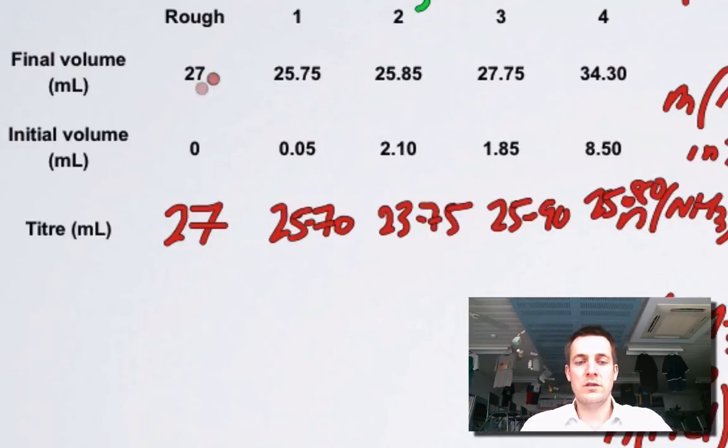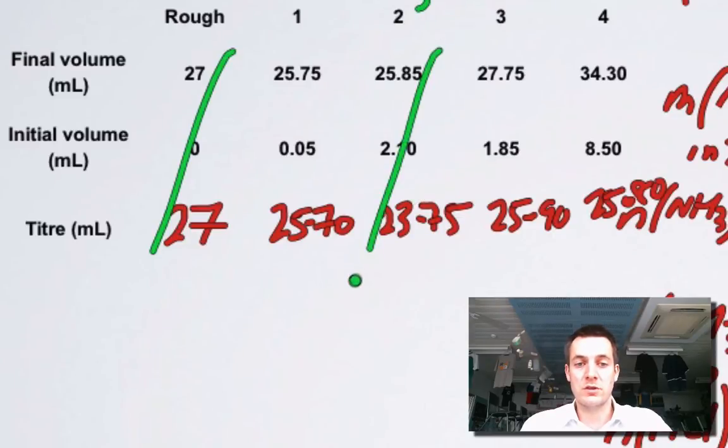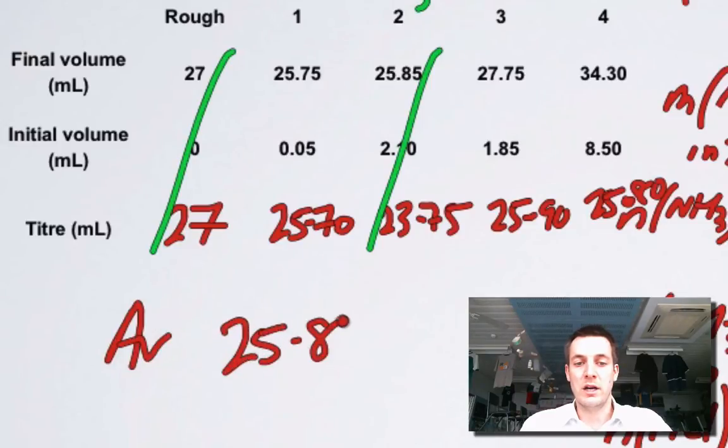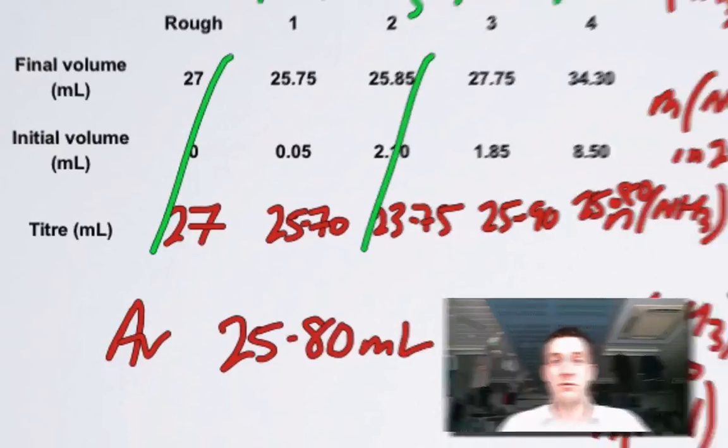Now, this rough one is included. We normally wouldn't use the rough one, but the reason for not using the rough one here is because it doesn't match the others to within 0.2 of a milliliter. So I'm crossing that one out. This one also seems to be a slightly anomalous result, so I'm crossing that one out. These all match to within 0.2 of a milliliter, so I'm going to average these volumes, and the average titer is going to be 25.80 milliliters.